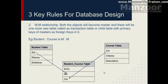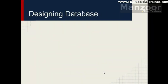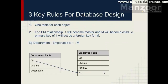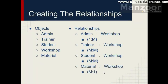These are the three key rules for any database design. In our scenario we have five objects: admin, trainer, student, workshop, and material — giving five tables. There are two one-to-many relationships: admin to workshop, making admin the master; and workshop to material, making workshop the master. The remaining two relationships are many-to-many, which will give birth to two new tables.